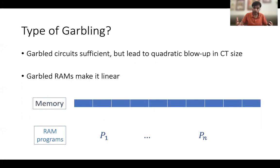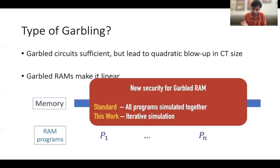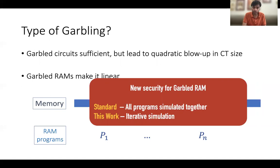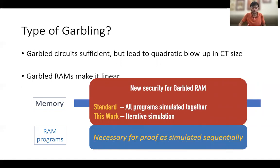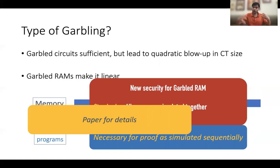Garbled RAMs are a strengthening of garbled circuits where garbled RAM allows a persistent memory that can be reused across a bunch of garbled RAM programs, and you can garble all these RAM programs independently for this particular memory. In this work, we provide a new security property for garbled RAM. Typically in standard security, all programs were simulated jointly in garbled RAM. But we show that if the garbled RAM programs can be simulated iteratively and sequentially, that also has interesting applications. We show that prior constructions for garbled RAM are already secure in this iterative simulation security model, and this is necessary for our proof as we have to simulate our garbled RAM sequentially in our construction.